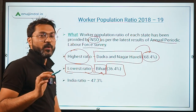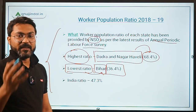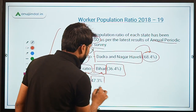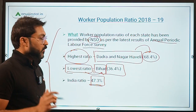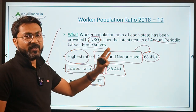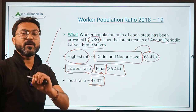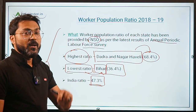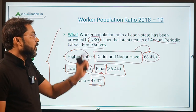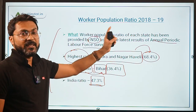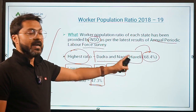Bihar is at 36.4%, and the overall ratio for the entire country is 47.3%. The worker population ratio means how many workers are working per 100 population. So in Dadra and Nagar Haveli and Daman and Diu, 68.4% of people are working out of every 100.